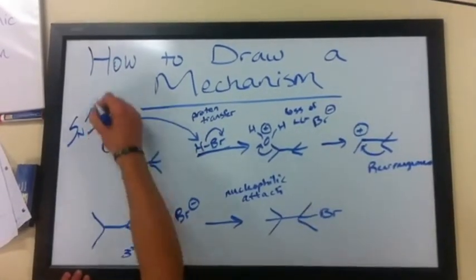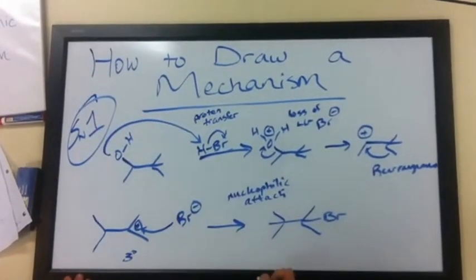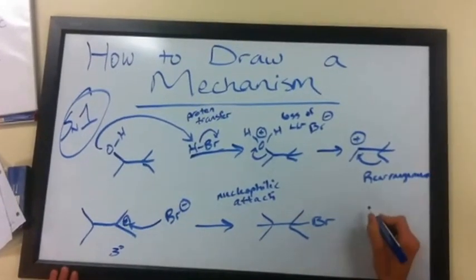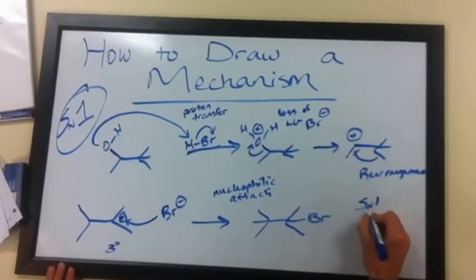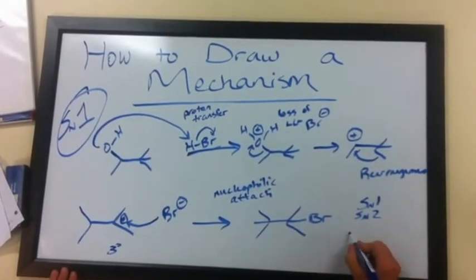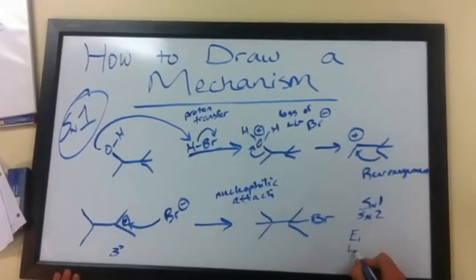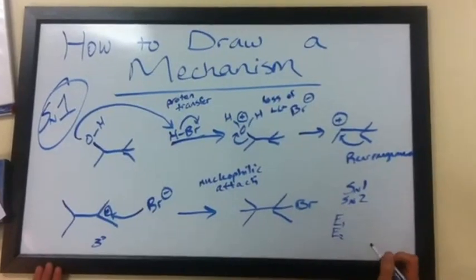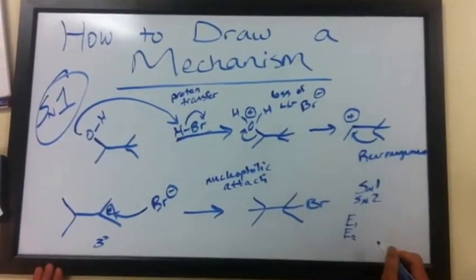You put all these together and you have an SN1 mechanism. There are other types of mechanisms to draw too, which include SN1, SN2, which are substitution reactions, E1 and E2, which are elimination reactions, and various types of addition reactions, which will be learned in later videos.